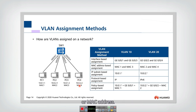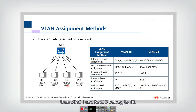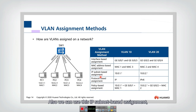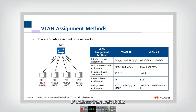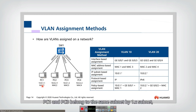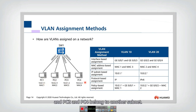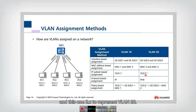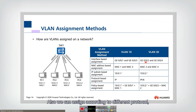We can also assign according to IP or MAC address. If we assign according to MAC address, then MAC 1 and MAC 3 belong to VLAN 10, and MAC 2 and MAC 4 belong to VLAN 20. We can also use IP subnet-based assignment — if PC1 and PC3 are on the same subnet (1.x) and PC2 and PC4 are on another subnet (2.x), we use those subnets to represent the VLANs.